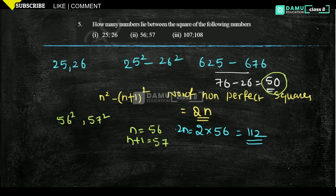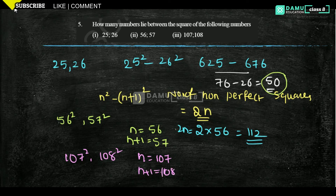Next one: 107² and 108². Here n equals 107 and n+1 equals 108. Then 2n is 2 into 107, which equals 214. So 214 numbers lie between 107² and 108².